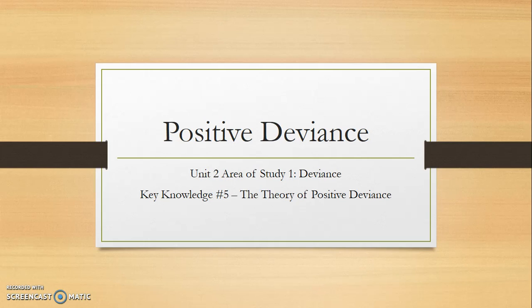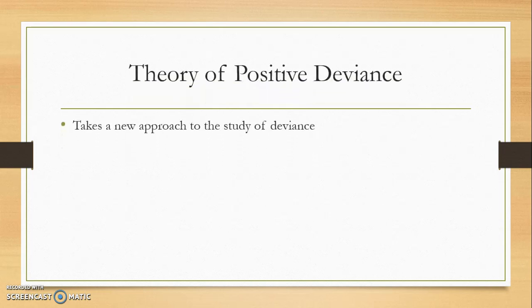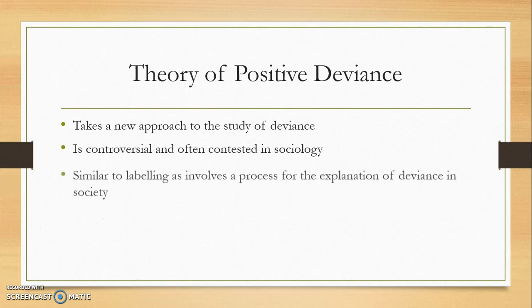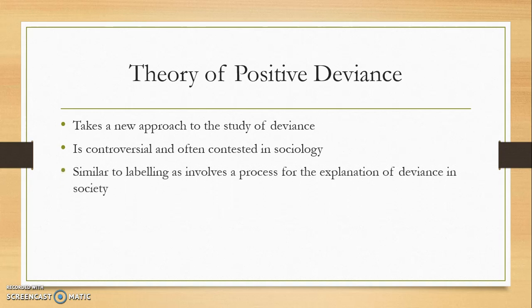This theory really concentrates on the positive side of deviance and its impacts on society. The theory of positive deviance takes a new approach to the study of deviance. It is often controversial and contested in sociology, because it challenges the traditional thinking of what deviance is. It's similar to labelling in that it involves a process — it's a social construct — and there's a process to enable someone to be a positive deviant.